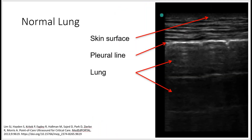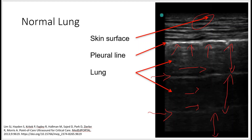This is a picture of a normal lung. Here is the skin surface, this is the pleural line, and the rest is lung. These lines you see here are called A-lines, which are normal artifacts on the ultrasound. Notice that they are about the same distance from the pleural line.